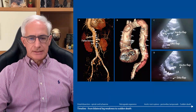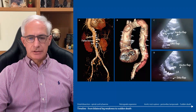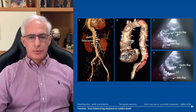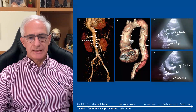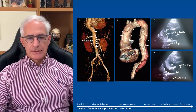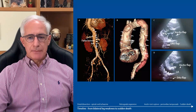30 minutes into the echo scan, fluid started accumulating rapidly in the pericardial space with no warning signs or preceding symptoms. This is indicated by the green arrows in Panel D.